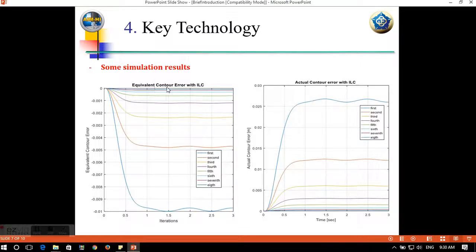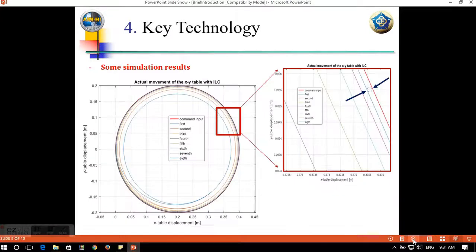And here are some simulation results. On the left screen, you can see this is equivalent contour error with ILC, this is without ILC. And after several learning times, the equivalent contour error model will be decreased. And equivalently, the actual contour error model will also be reduced after several learning times.